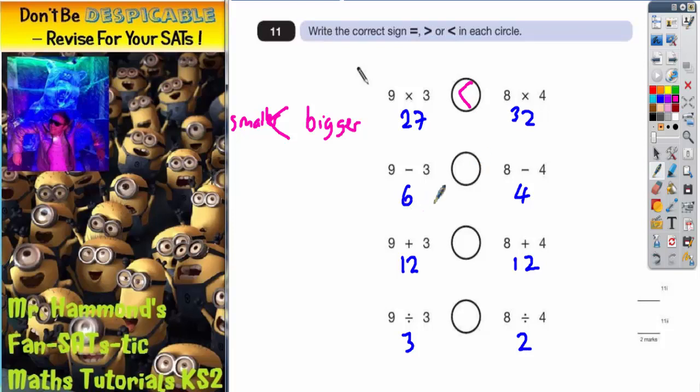On this one, 6 is bigger than 4, so the crocodile's mouth has to be pointing towards the 6, because he's going to eat the 6, because he's hungry.